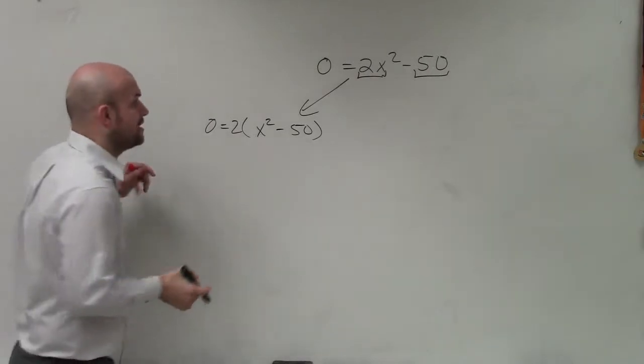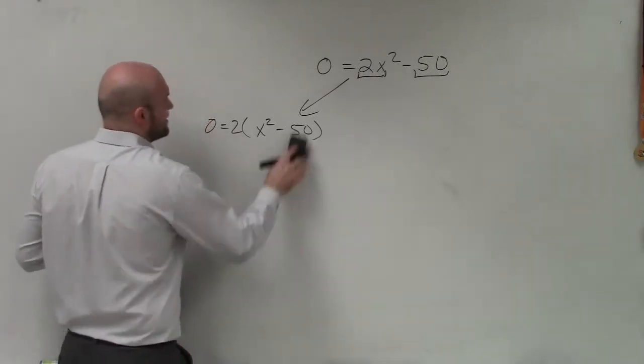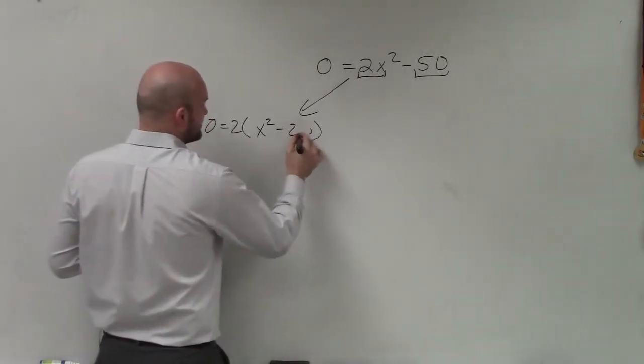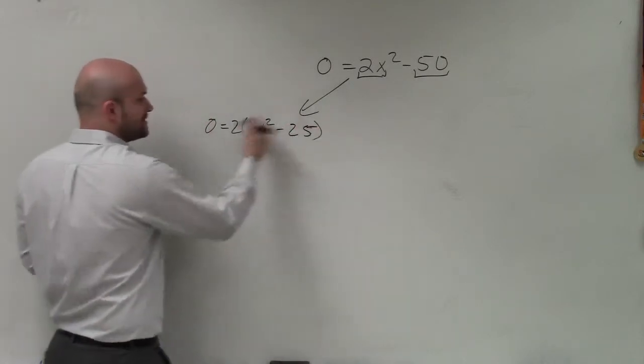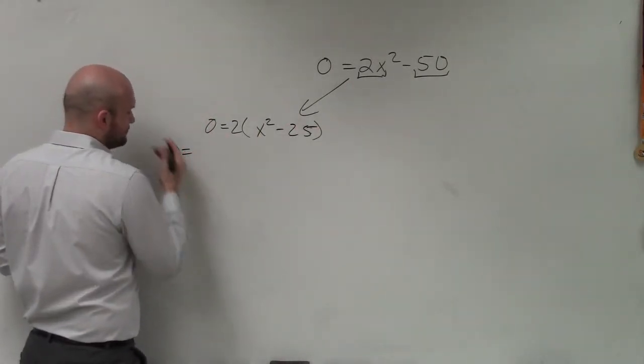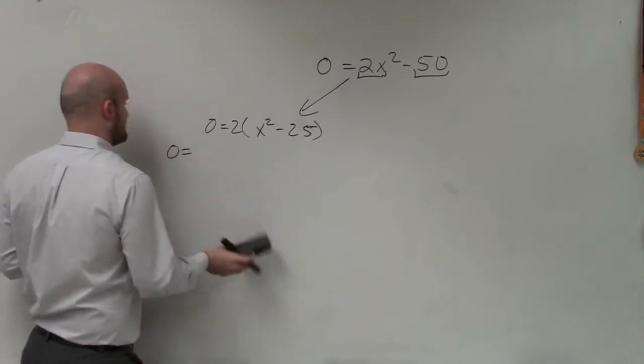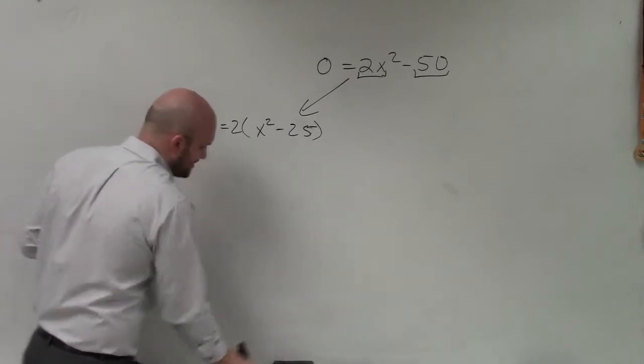Now then I can apply the zero product property. Now I have the product of two terms equal to 0, so I can use the zero product property. That doesn't really make sense. So let me go and explain it in a different way.